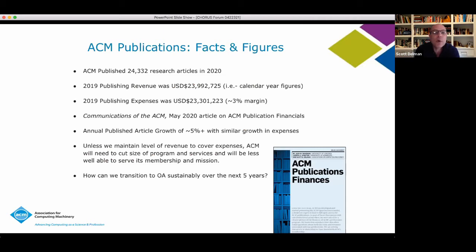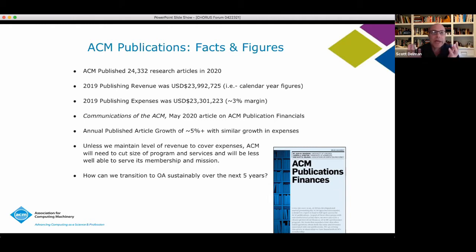ACM is about a $20 to $25 million publishing operation, and on the expense side we're a similar number. So we're not generating an enormous surplus or profit — we are a nonprofit society publisher. When we developed the ACM Open model, it was really built from a perspective of cost sustainability, making sure that we have enough income over the long term to continue our publishing operations and serving our membership.